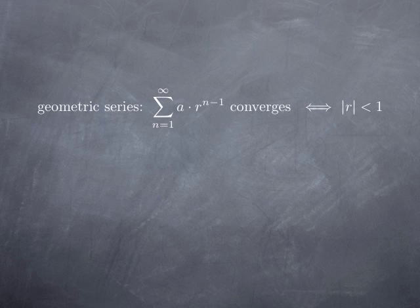One of the first kinds of series that we looked at, where it was easy to decide convergence, was geometric series — things of the form a constant times a power of a fixed number. In standard form: a times r to the n minus 1, where r is the so-called common ratio. The series is convergent exactly when the common ratio has absolute value strictly less than 1.